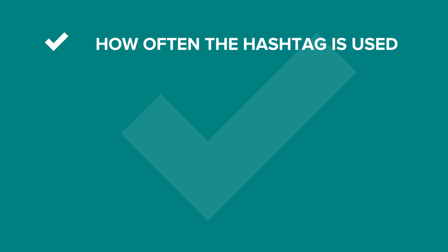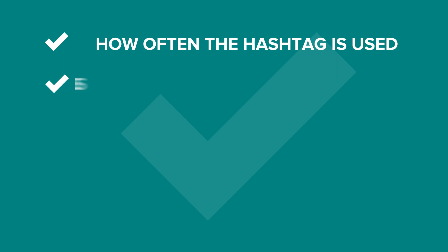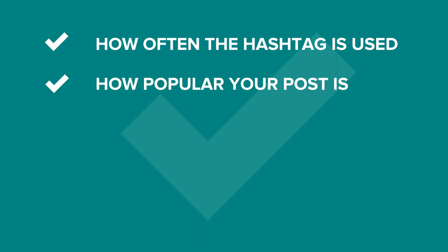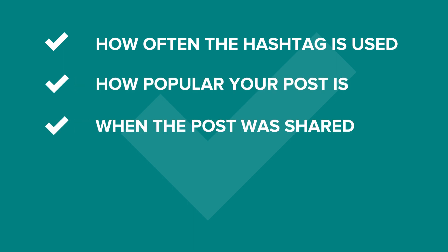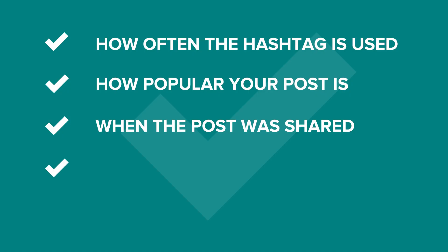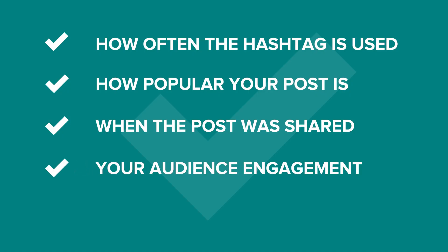The likelihood of seeing your post at the top of a given hashtag page depends on many different aspects: how often the hashtag is used — if it's overused, chances of your post ending up at the top are unlikely; how popular your post is, whether it already has lots of likes and comments; when you shared it — although you will see older posts in a hashtag search, top posts will likely be only a few days old; and the engagement of your audience — how large it is and how often they engage. All these factors affect your visibility on a hashtag page, and the higher your post appears, the better, as it will be more discoverable by people who don't follow you yet.